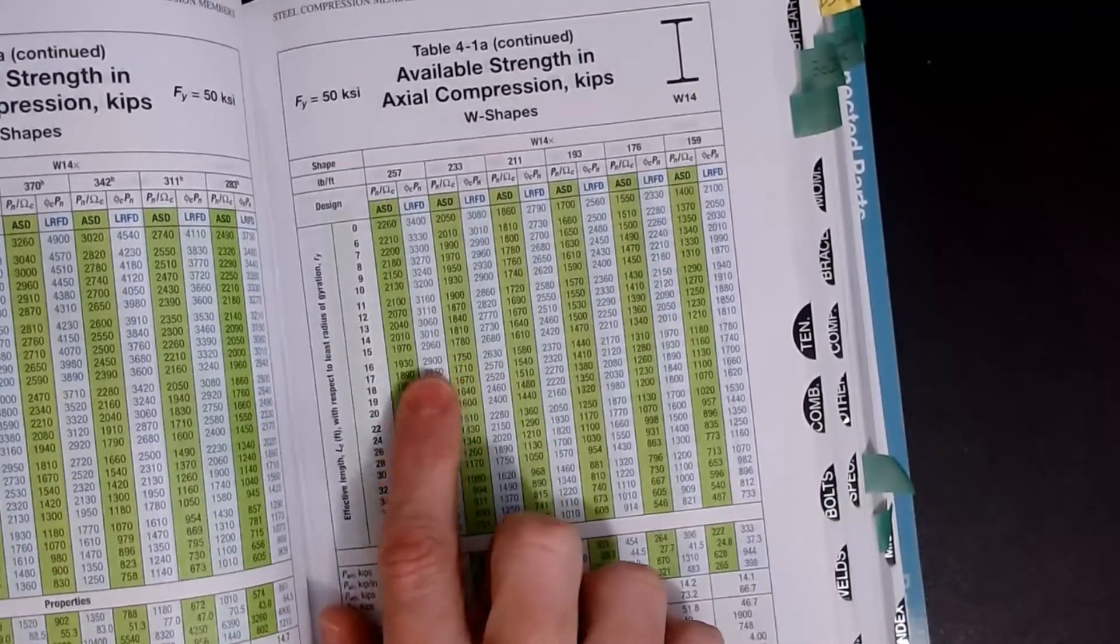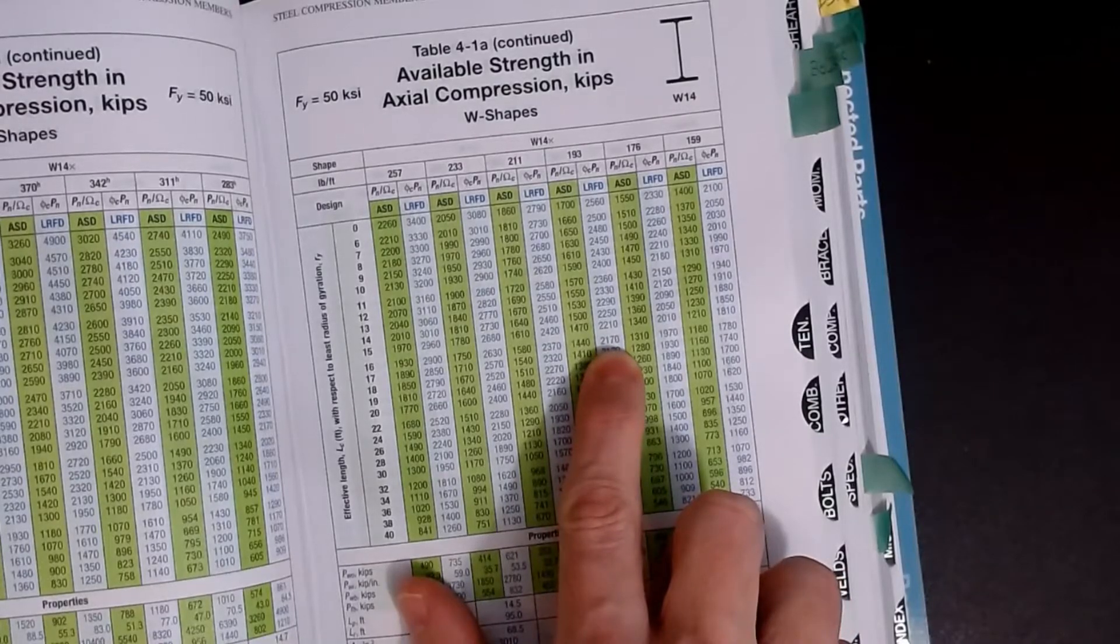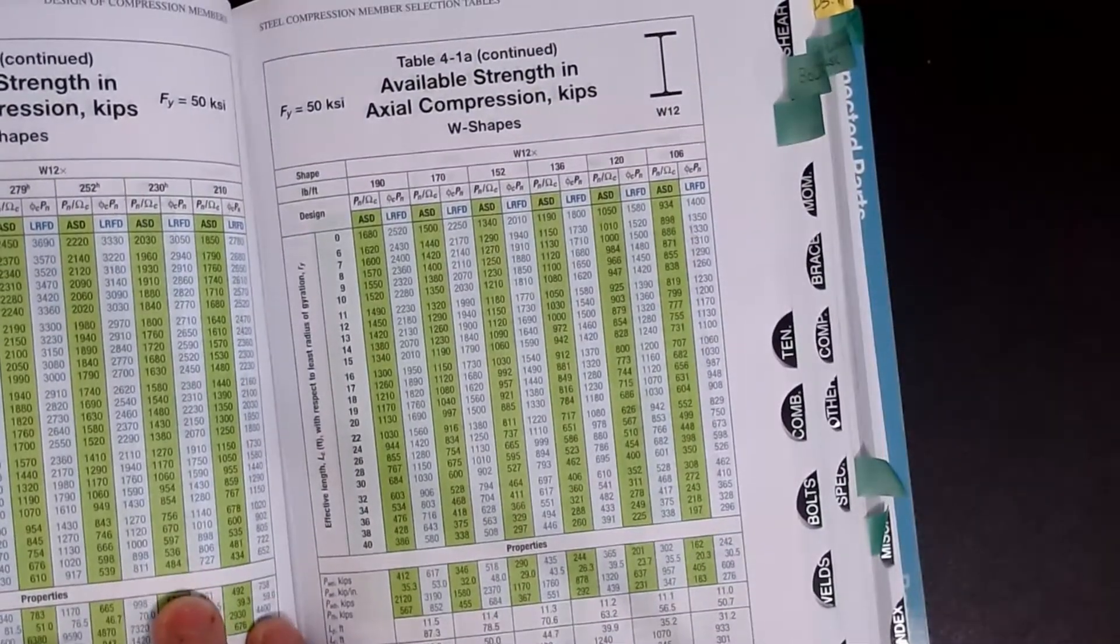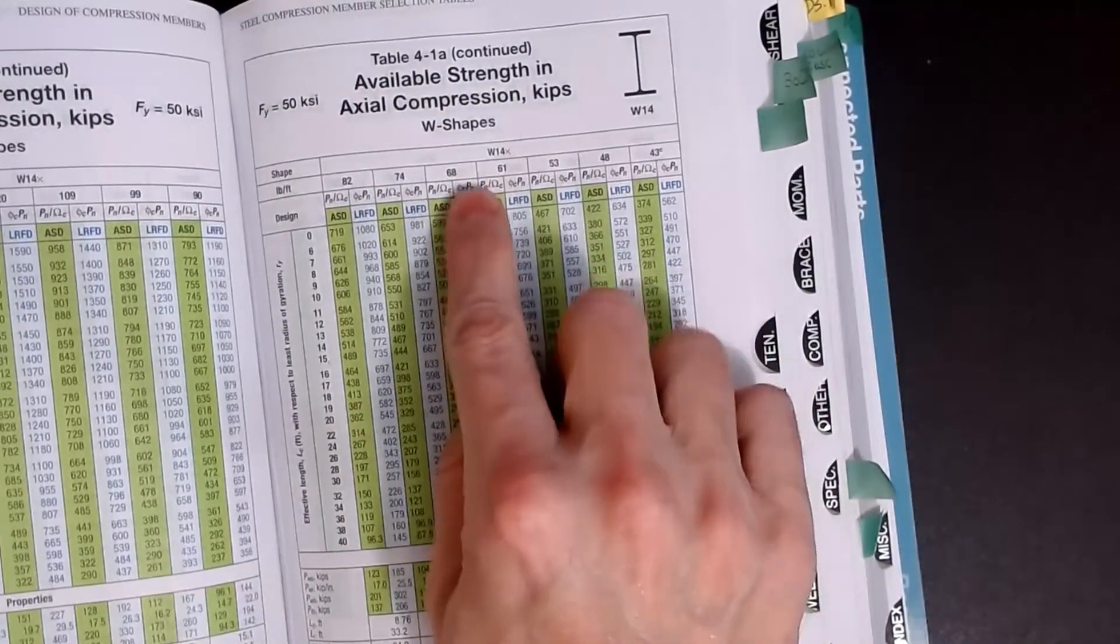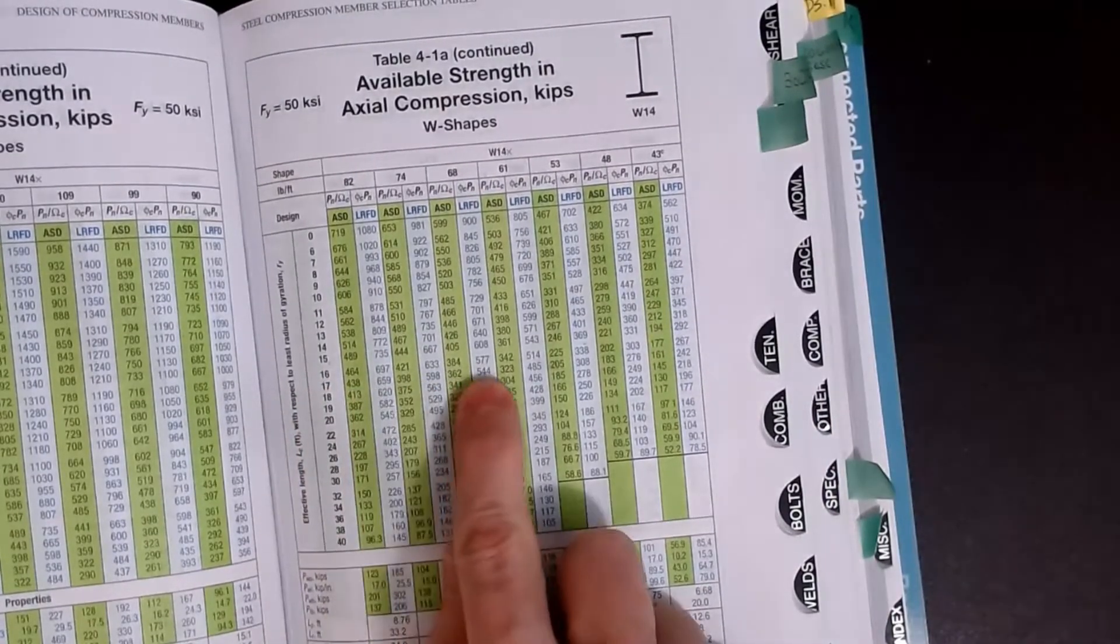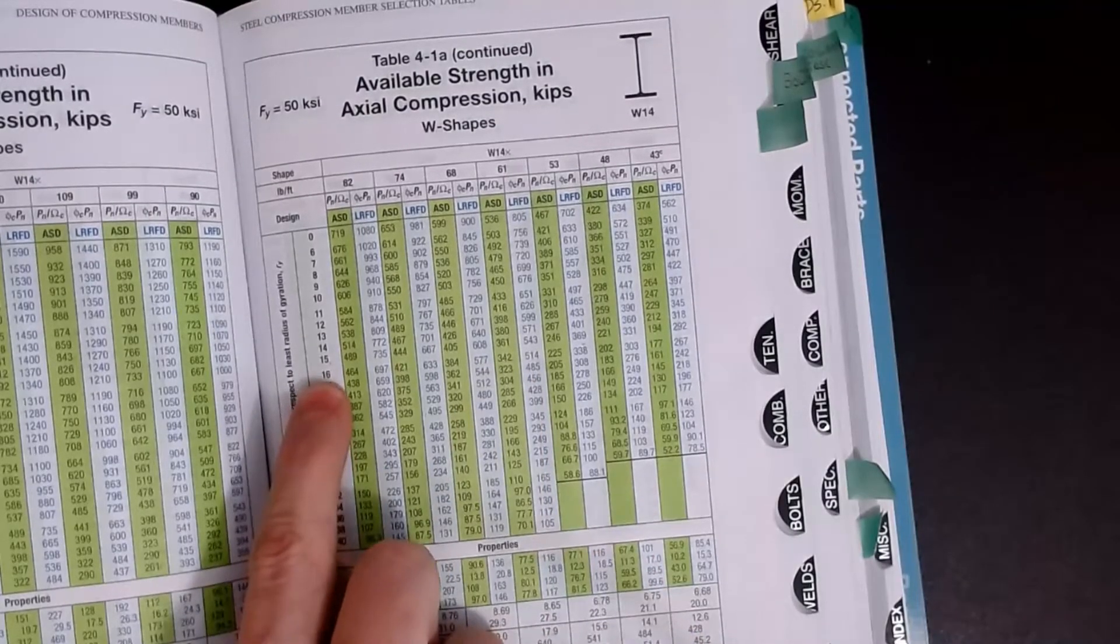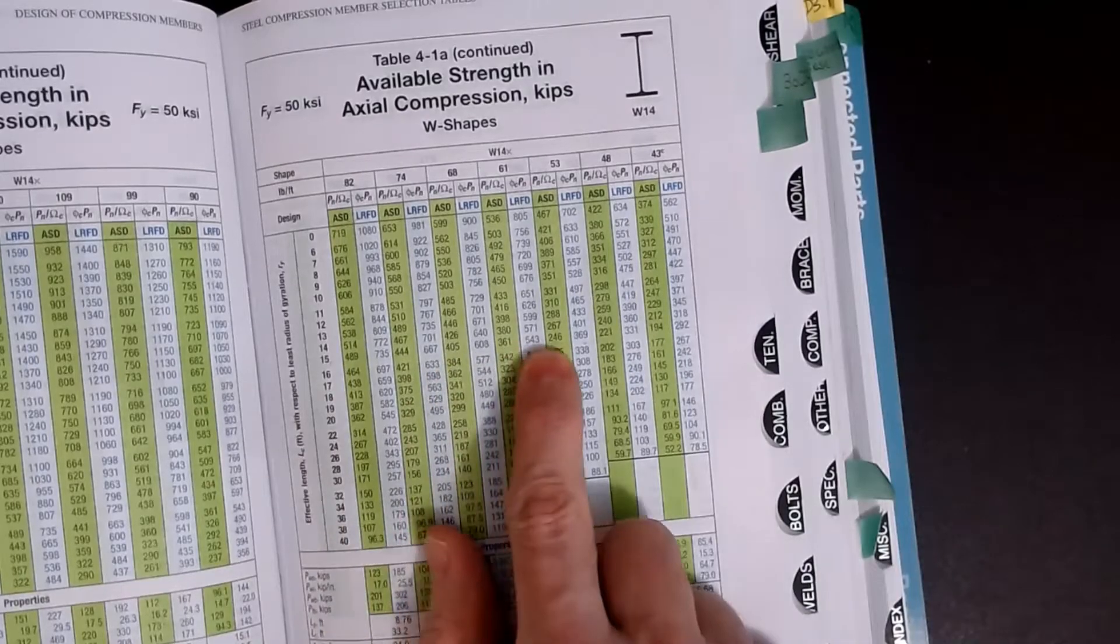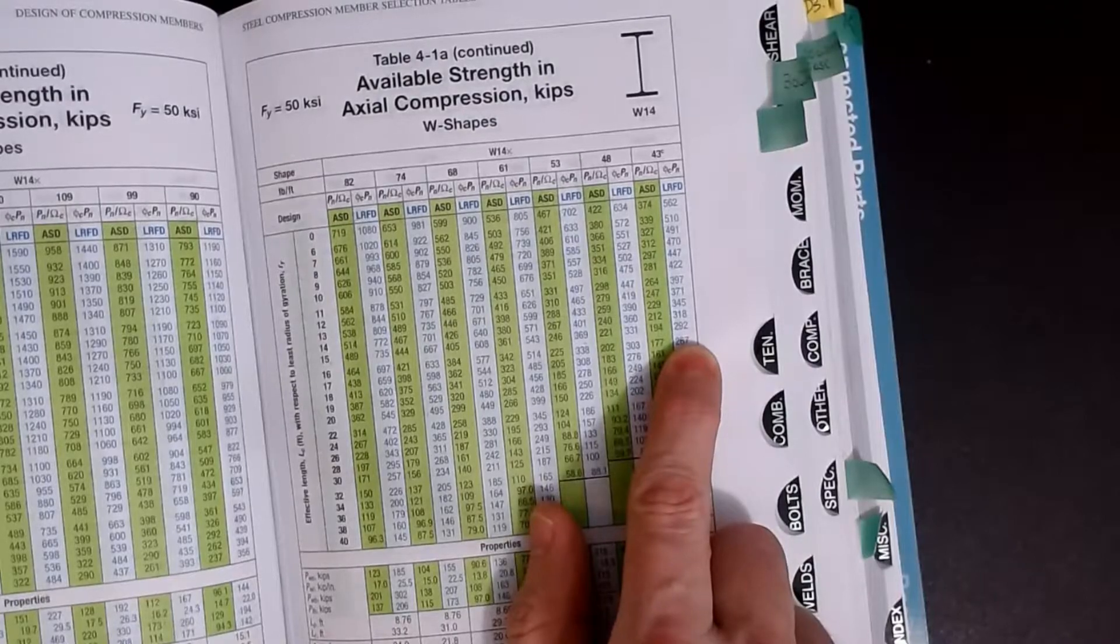That is a monster column, so obviously we only need 274 for ours. So what we're going to do is flip through and very quickly, for our case where we said we needed KL of 16 feet and a PU of 274, we can very quickly go in and read off all of the different sizes that will start to work. I'm going to come across on the 16 line and I can see that even a W14 by 193 is worth 2170, so we're still way too large.